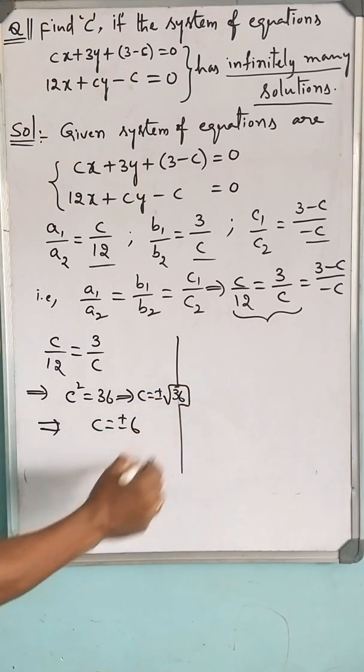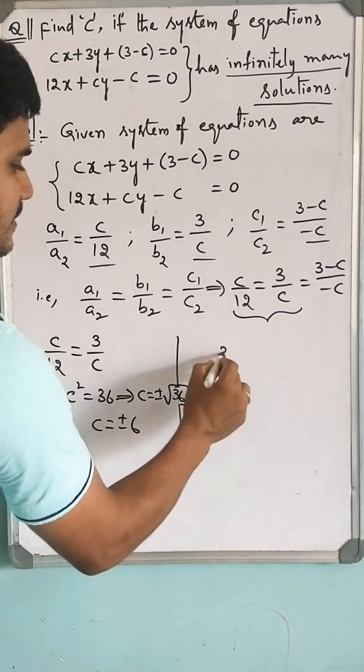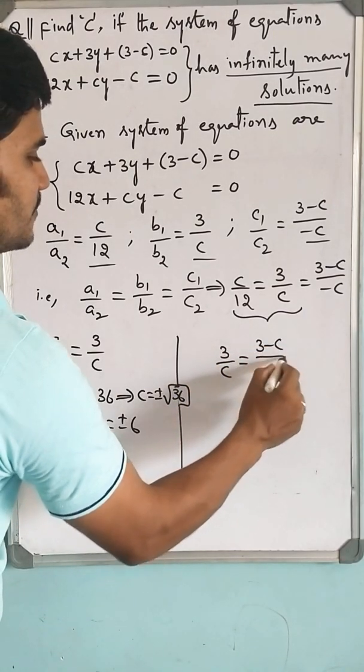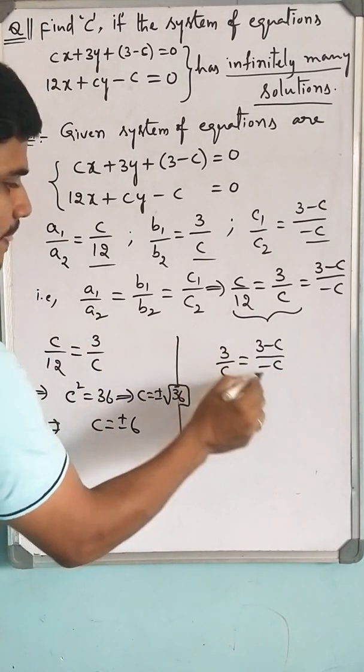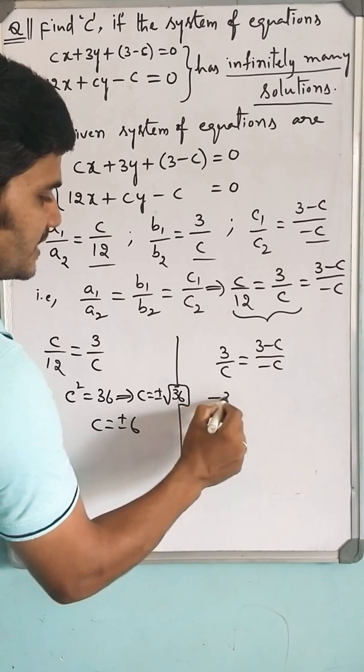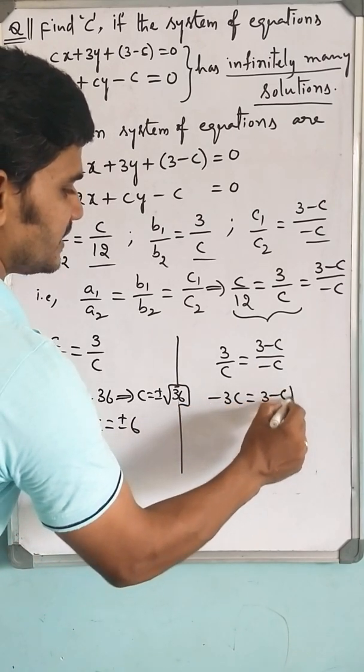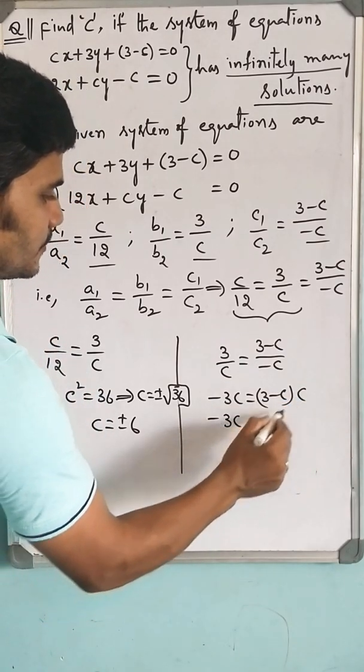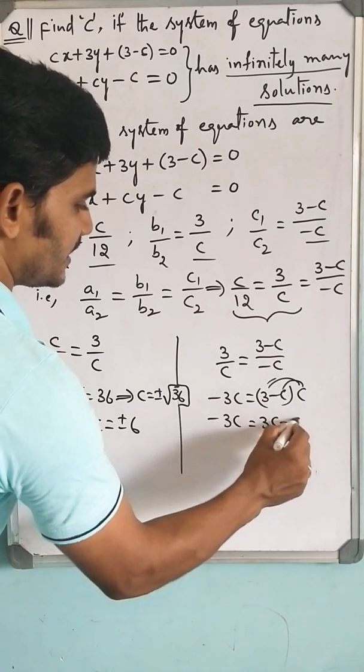Let us see what we get by the second case. If 3 by C equals 3 minus C by minus C. Do the cross multiplication. Minus 3C equals minus C into 3 minus C. Minus 3C equals, applying the distributive property,